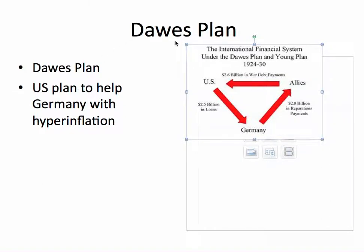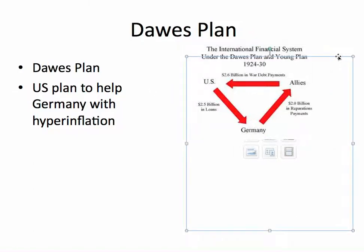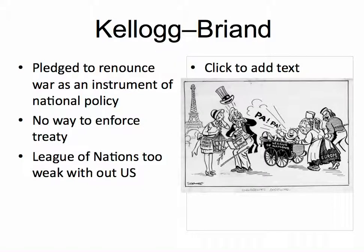They come up with the Dawes Plan in the United States, and the U.S. gave $2.5 billion in loans to Germany. The Germans paid $2 billion in reparations payments. And then the Allies — the French and the British — they paid $2.6 billion in war debt payments to the U.S. So as long as the U.S. is funding everything, it is making everything much cheaper. This is the U.S. plan to help Germany with hyperinflation.